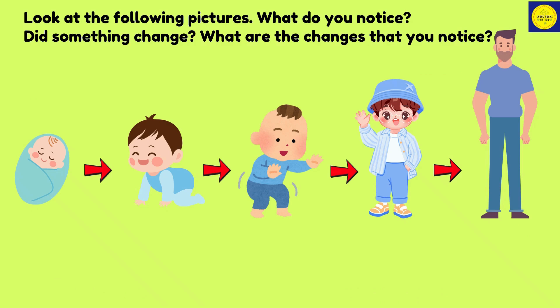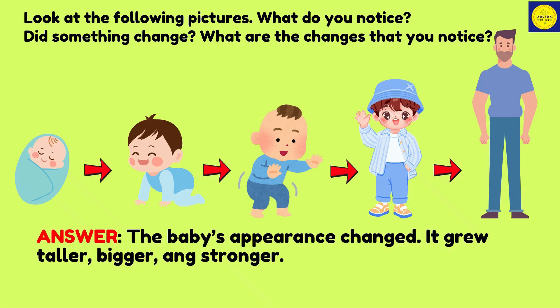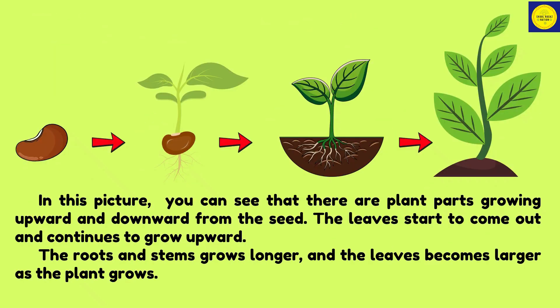What do you notice? Did something change? The baby's appearance changed — it grew taller, bigger, and stronger. In this picture, you can see that there are plant parts growing upward and downward from the seed. The leaves start to come out and continue to grow upward, and the roots and stems grow longer, and the leaves become larger as the plant grows.